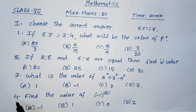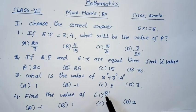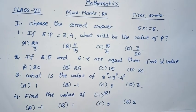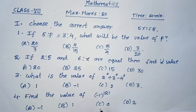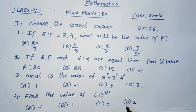Fourth question, find the value of minus 1 whole power 121. Option A, minus 1. Option B, 1. Option C, 0. Option D, 2.